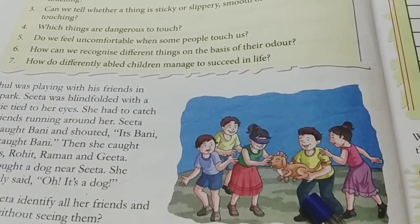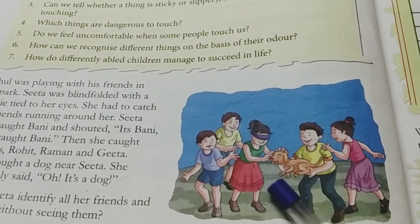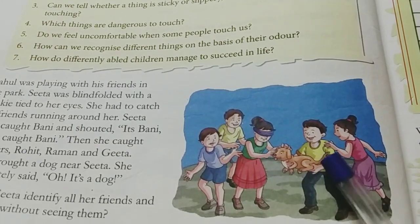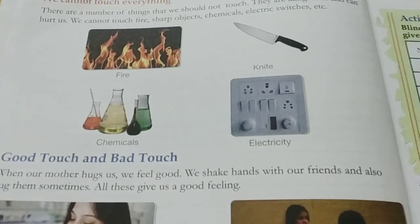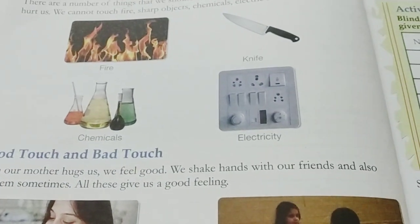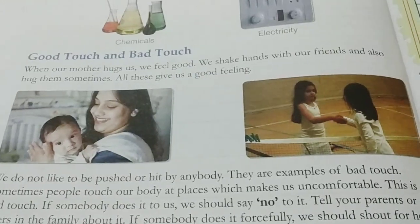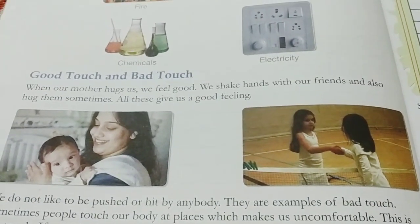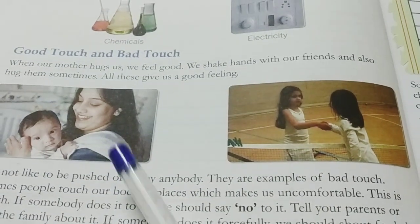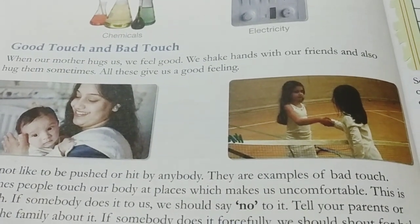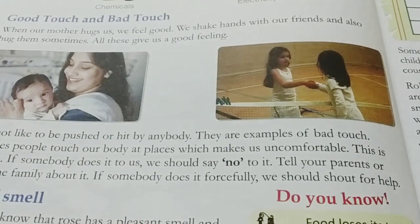See here, children — what they are doing: they have blindfolded their eyes and with touch they are saying what the animal is. We can also identify dangerous things such as fire, knives, chemicals, and electricity. Sometimes we feel uncomfortable with the touch of certain people. When a mother touches us we feel pleasant, but if someone's touch makes us uncomfortable, we should tell our elderly people at home.